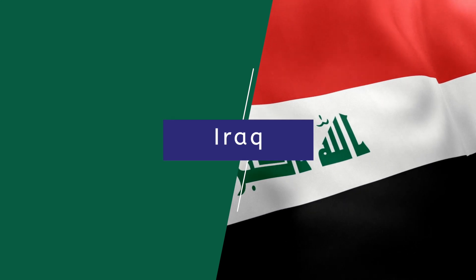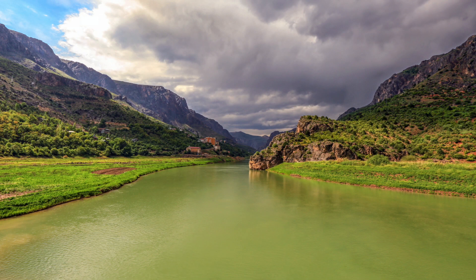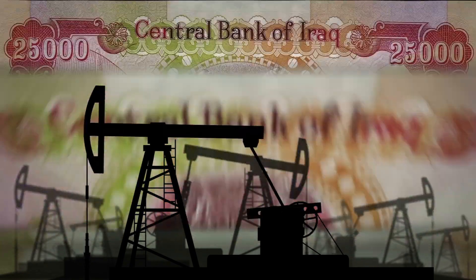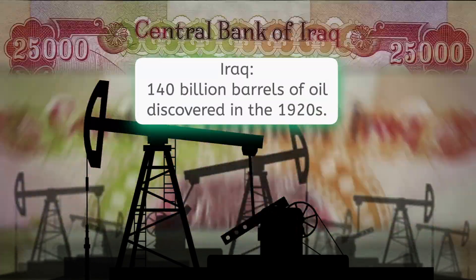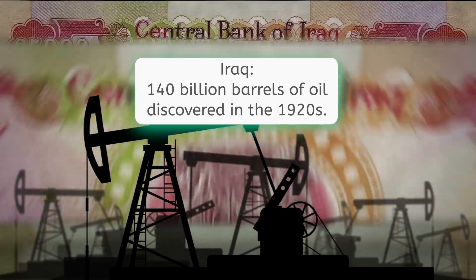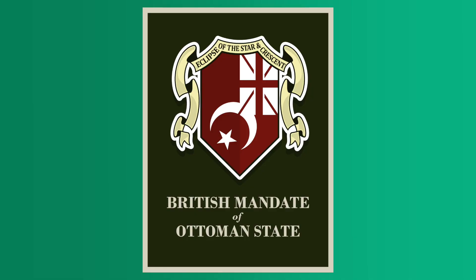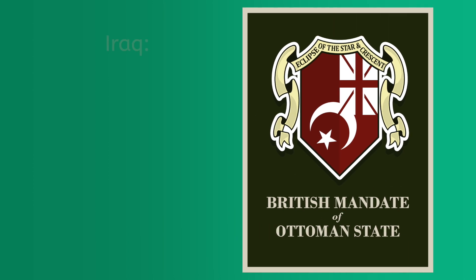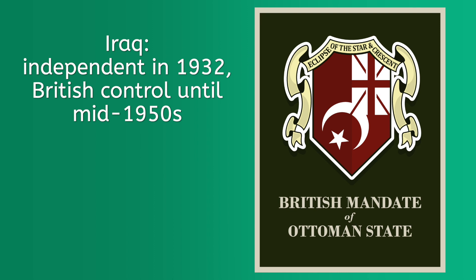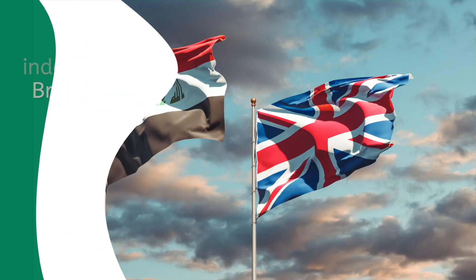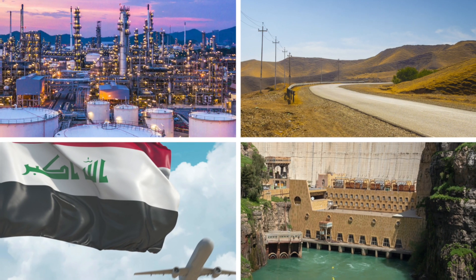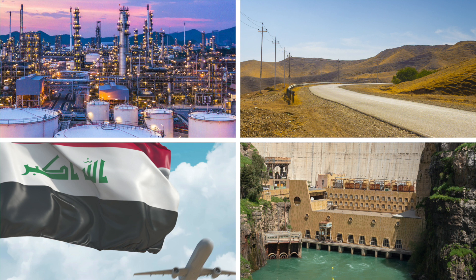Iraq. Like the others of the Fertile Crescent, Iraq utilized the incredibly rich soil between the Tigris and Euphrates rivers for growth. Unlike some of the others, the discovery of the fifth largest proven oil reserves in the world — totaling an estimated 140 billion barrels — in the 1920s inevitably altered the country's trajectory. The British mandate after World War I included most of Iraq, and though it technically became independent in 1932, in reality the British maintained control until the mid-1950s. During this time, much of Iraq was modernized primarily for the exportation of oil, and roads, airports, hospitals, schools, dams, and irrigation systems along the Tigris and Euphrates were a boon to the Iraqi economy.